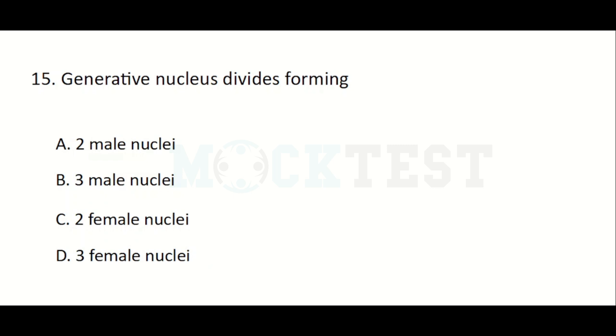Generative nucleus divides forming — Option A: Two male nuclei, Option B: Three male nuclei, Option C: Two female nuclei, Option D: Three female nuclei.